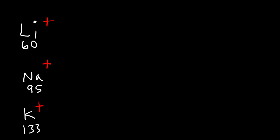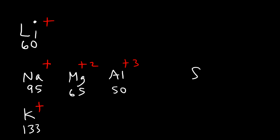As you go to the right, ionic radii decreases as well. Magnesium is a lot smaller than sodium, and aluminum is a lot smaller than magnesium. This is if you're looking at positively charged ions. Magnesium is 65 picometers, aluminum is 50 with a plus 3 charge. Now as you cross over from cations to anions, something interesting happens. Sulfide is a lot bigger than the aluminum cation, and so is chloride.